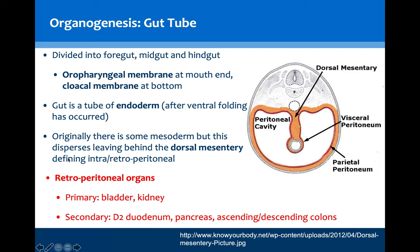Very commonly assessed is medical students' understanding of retroperitoneal organs. One can consider these as primary or secondary. Primary retroperitoneal organs are those that form totally outside of the peritoneum. Secondary retroperitoneal organs are those which initially form intraperitoneally but due to movements and rotations end up in a retroperitoneal position. I cannot stress how commonly assessed this small factoid is.